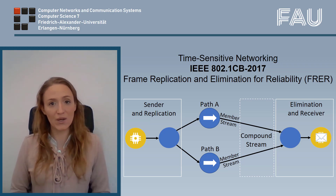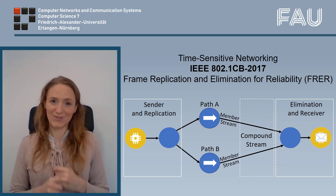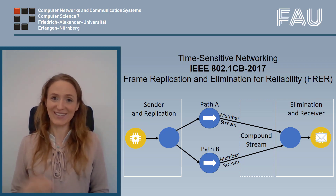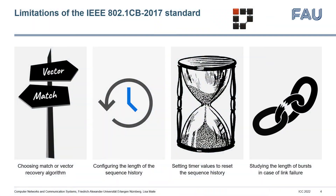For this sequence recovery function to work properly and to identify which packet is new and which is duplicated, we need several configuration settings. Currently, the standard does not help the user how to configure this function. Therefore, in this talk, we focus on the configuration of safe sequence recovery functions. While FRER is essential for time-critical applications, the standard does not yet provide guidance on its configuration, but leaves it up to the user. As far as we know, we are the first to provide formulas for users to set these configurations properly.